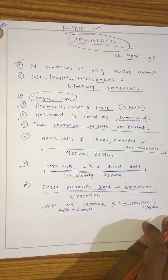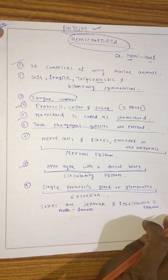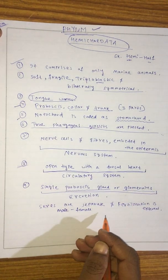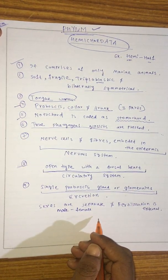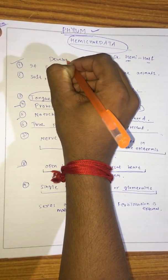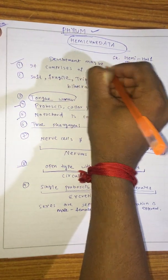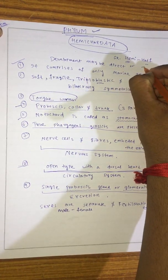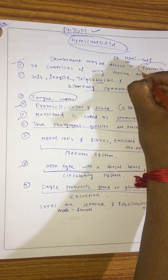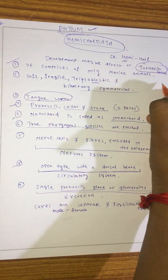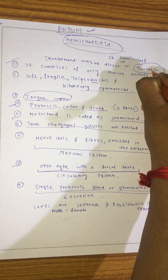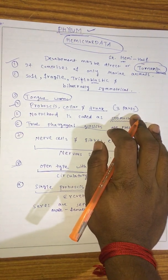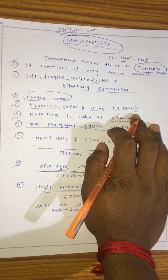Fertilization is external. The development may be direct or through a tornaria larva.